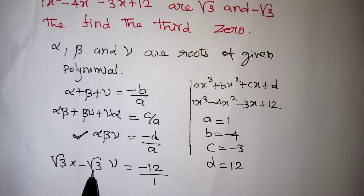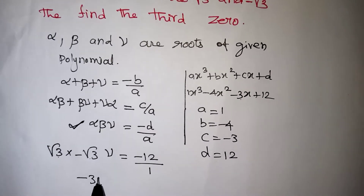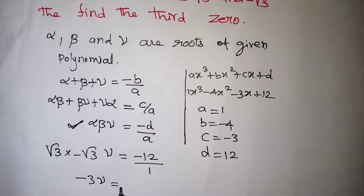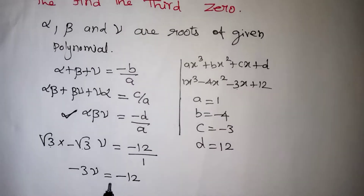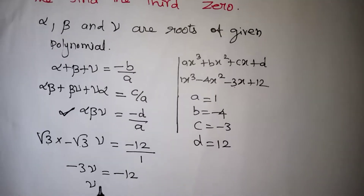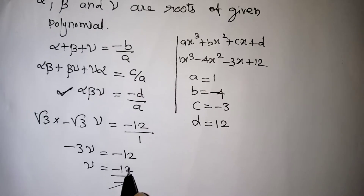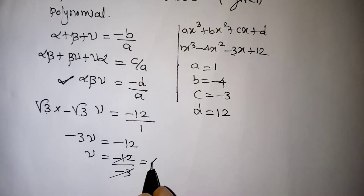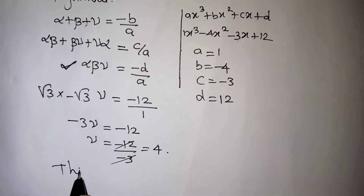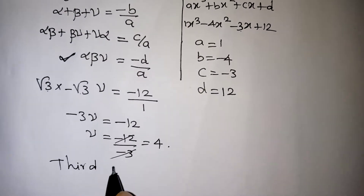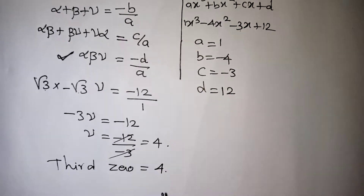Root 3 × root 3 = 3, so we get minus 3 × gamma = minus 12. Taking minus 3 to the denominator: gamma = minus 12 / minus 3. The cancellation gives 4. So gamma = 4 — the third zero of the given polynomial is 4. That is your correct answer.